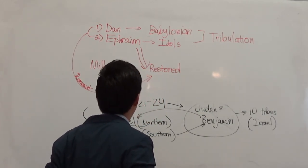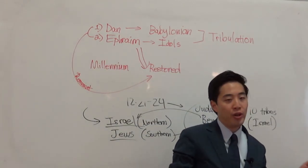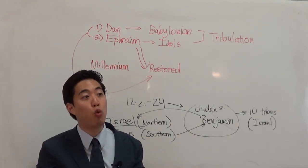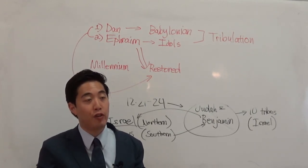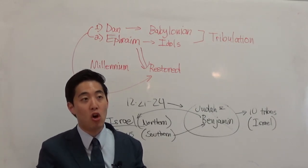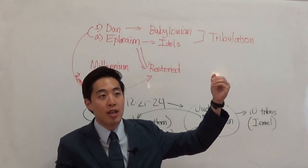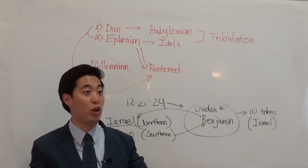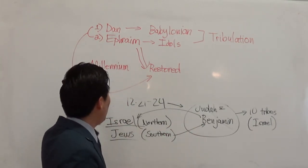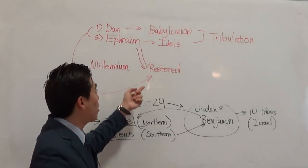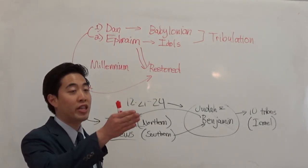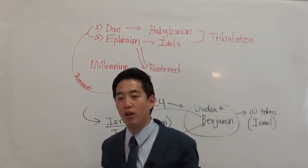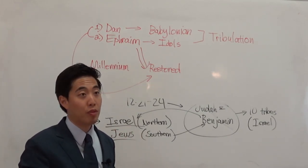Judaism is the one religion that acknowledges the Old Testament and refuses idol worship. When the antichrist sets up his image, most Jews will reject it because they don't worship idols and are still looking for their true Messiah. They'll recognize the antichrist isn't him, which is why the antichrist ends up persecuting the nation of Israel.